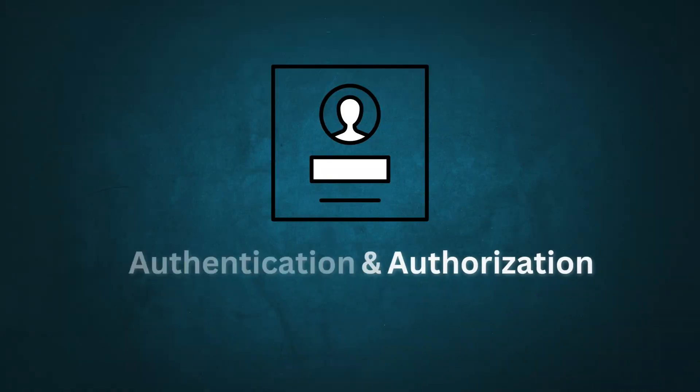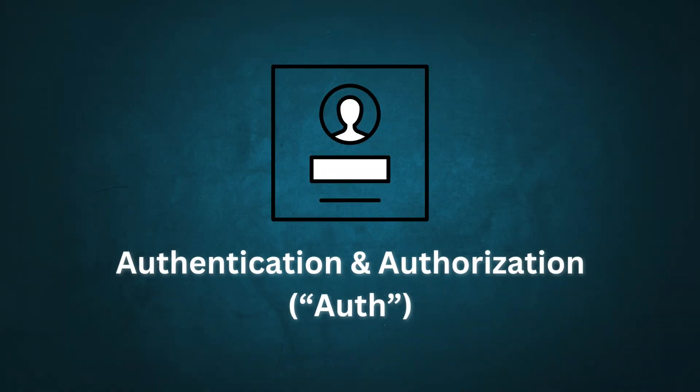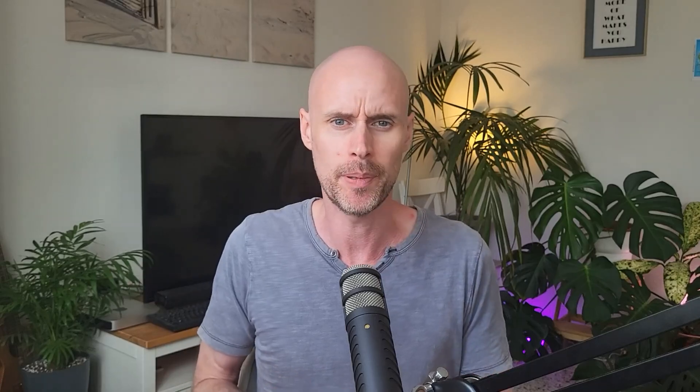Now let's talk about your app itself. You've probably heard of authentication and authorization, commonly referred to as auth. When users log into your app, a provider like Firebase Auth will receive an API request that includes their social credentials or their password and email combo, and respond with an access token known as a JWT. The app will store that token locally on their device, where it will live for about an hour before it expires — and that's what authentication is.